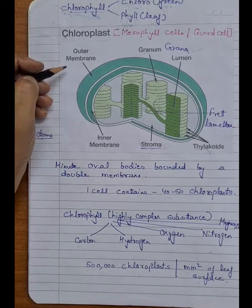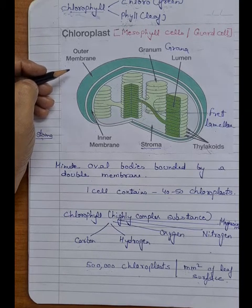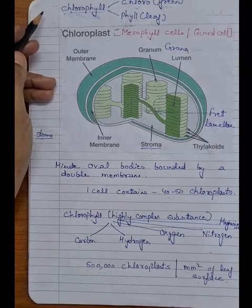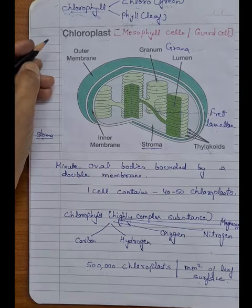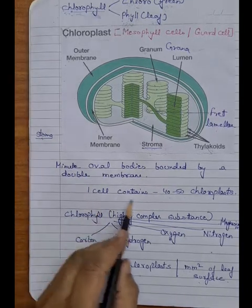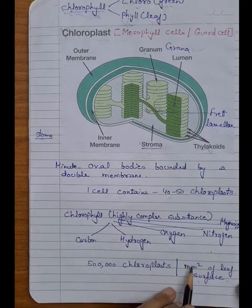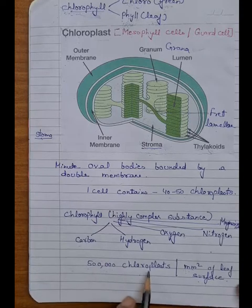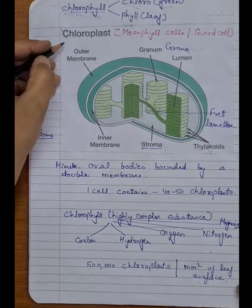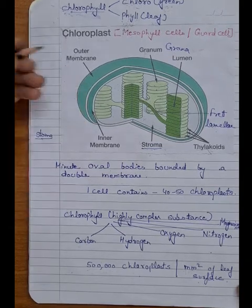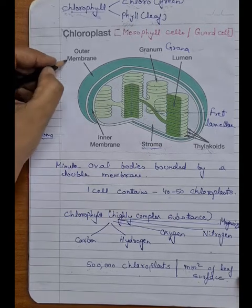In a dicot leaf, between the upper and lower epidermis, two kinds of mesophyll cells are present: palisade mesophyll and spongy mesophyll — both containing chloroplasts. Chloroplasts are also found in the guard cells of stomata and in the outer layer of young green stems. One plant cell approximately contains 40 to 50 chloroplasts, or put another way, one square millimeter of leaf surface may contain 5 lakhs of chloroplasts. This topic is very important from an examination point of view, so also practice the diagram of chloroplasts.